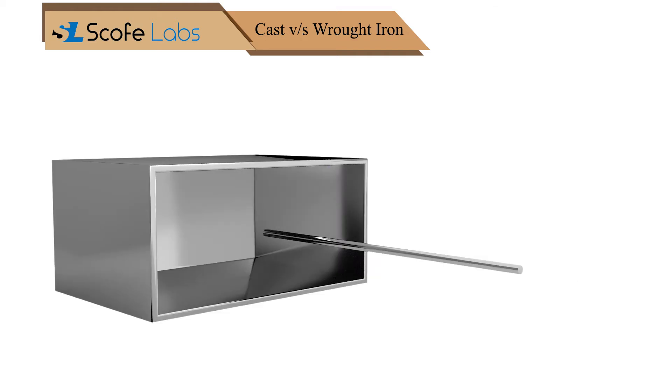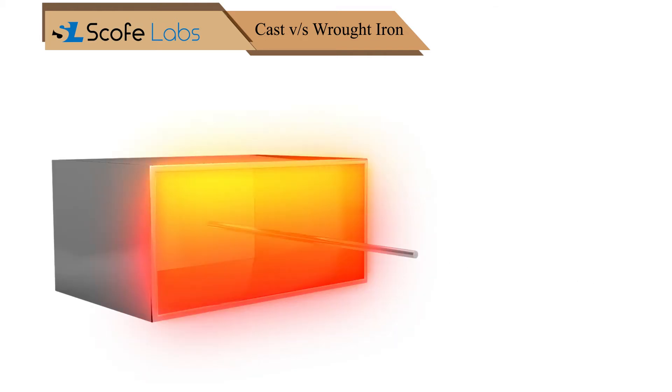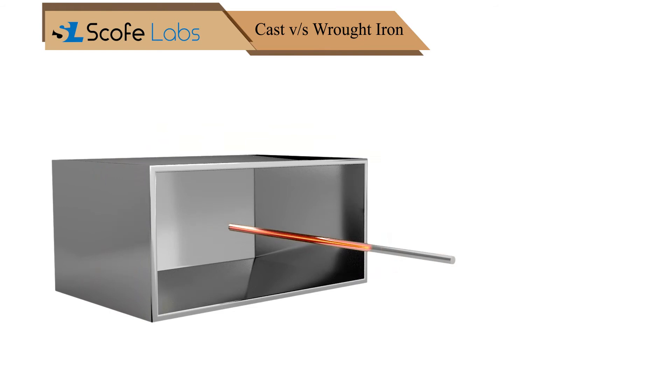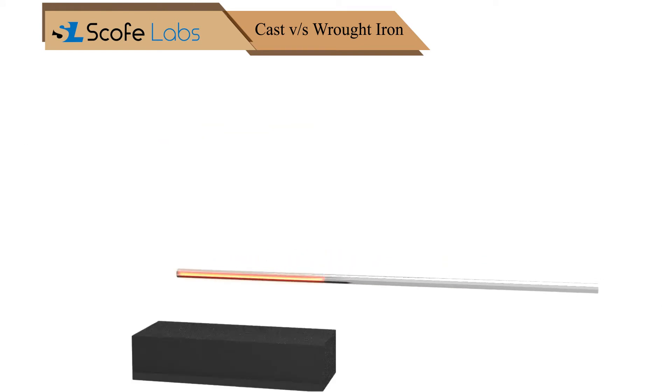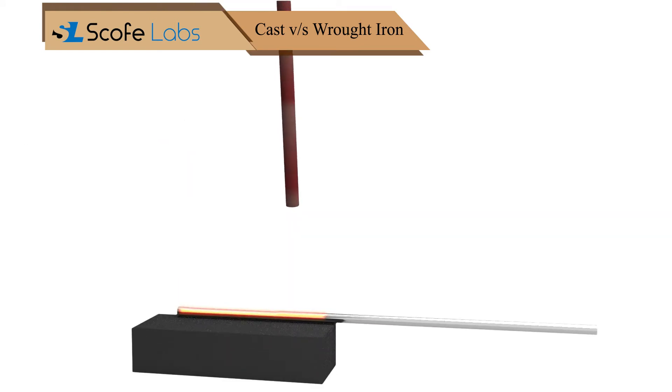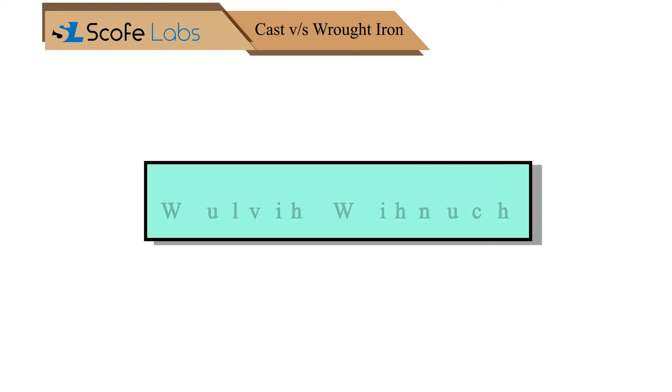The product obtained by hammering or forging of metal without being melted is known as a wrought product.